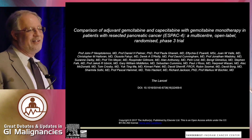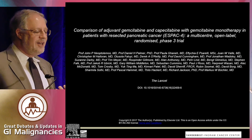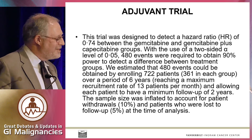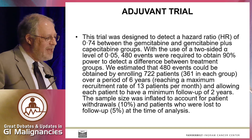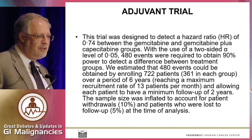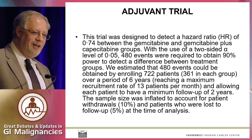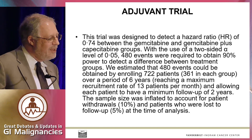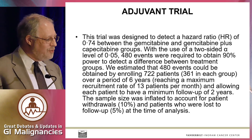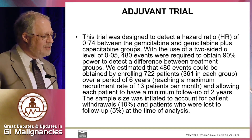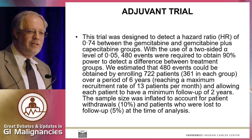So the SPAC-4 — let's go over the SPAC-4. This is a very interesting group of people in the way they present things. The trial was designed to detect a hazard ratio of 0.74 between the gemcitabine and gemcitabine plus capecitabine groups. They didn't achieve a hazard ratio of 0.74, but that's okay, because you get more power in the post-hoc analysis than you plan for, usually. They estimated that 480 events could be obtained by enrolling 722 patients, and they inflated their sample size to account for patient withdrawals and patients lost to follow-up, which is a good idea.